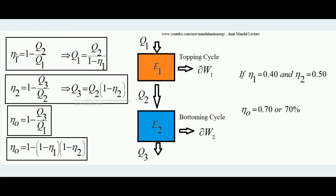If I want Q1 in terms of efficiency and Q2, this equation can be rearranged: Q1 = Q2 / (1 − η1). Now for the efficiency of the second engine: η2 = 1 − Q3/Q2. If I want Q3 in terms of η2 and Q2, it comes out as Q3 = Q2 × (1 − η2).